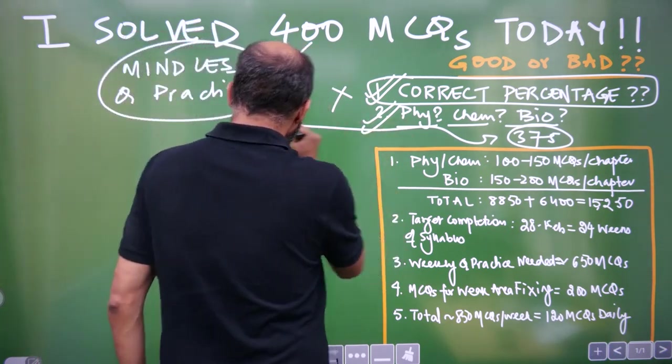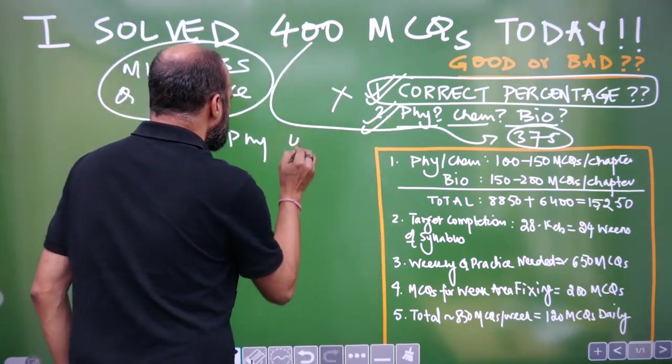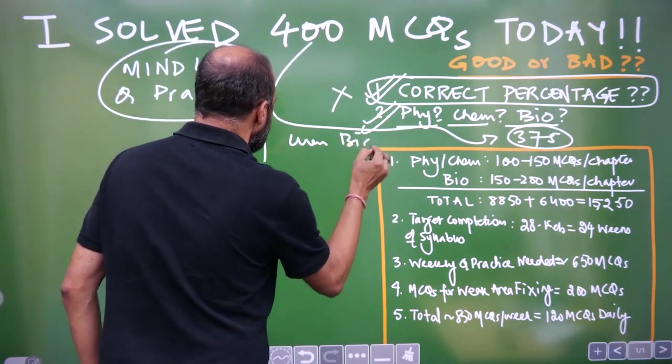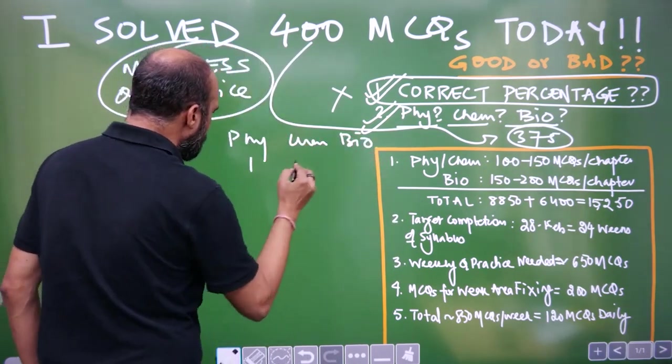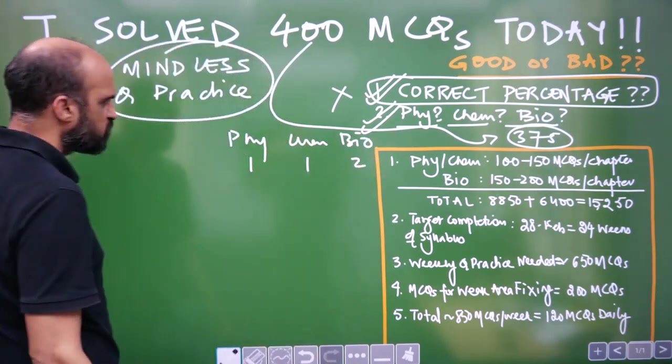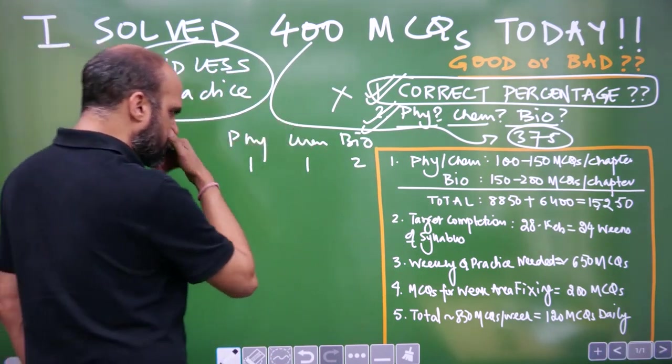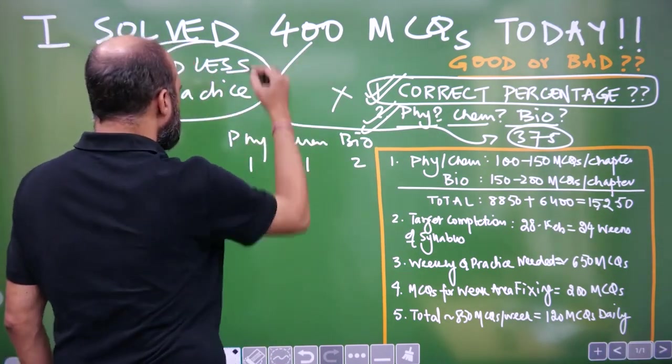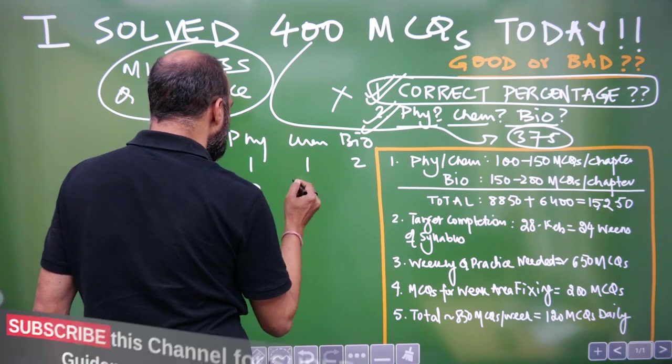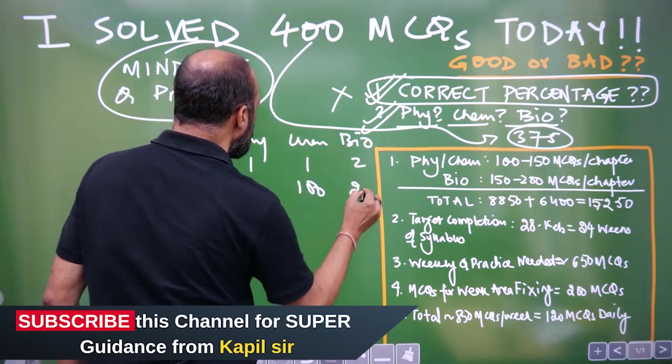Second thing is physics, chemistry, bio. In each exam, you will get questions in this ratio in physics, chemistry, bio. When you are practicing questions, let's say if you practice 400 questions, also the breakup should be 100 questions physics, 100 chemistry, 200 bio.